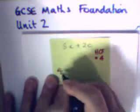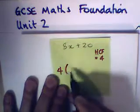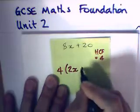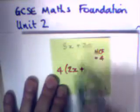So we put 4 outside the brackets. 4 times something is 8x, we can see that's 2x. And 4 times something is 20, we can see that is 5.